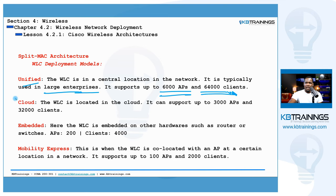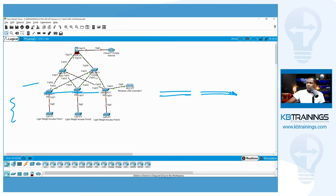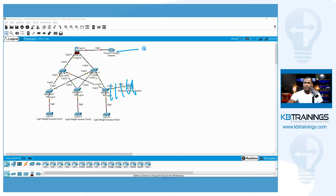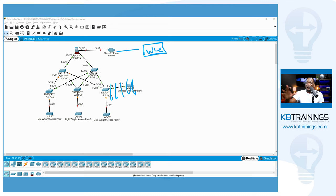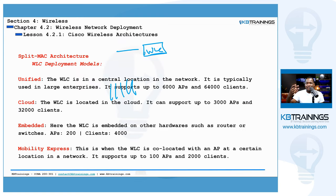The second deployment is the cloud deployment, where the wireless LAN controller doesn't reside on your local network — it's somewhere on the internet, such as on Azure or AWS. It's not on-premise. This deployment is a little less powerful than the unified deployment, supporting up to 3,000 APs and 32,000 clients.